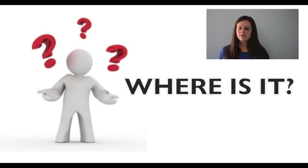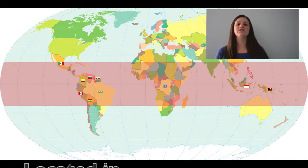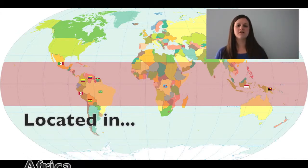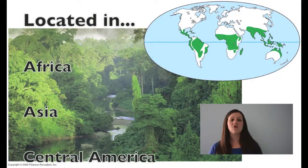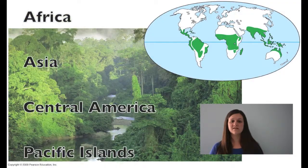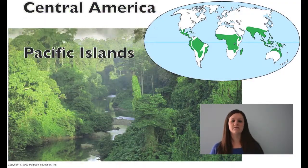So where is the tropical rainforest located? Well, it's located along the equator, which is the middle part of the earth. The weather is always sunny, so it's a perfect place for the rainforest.